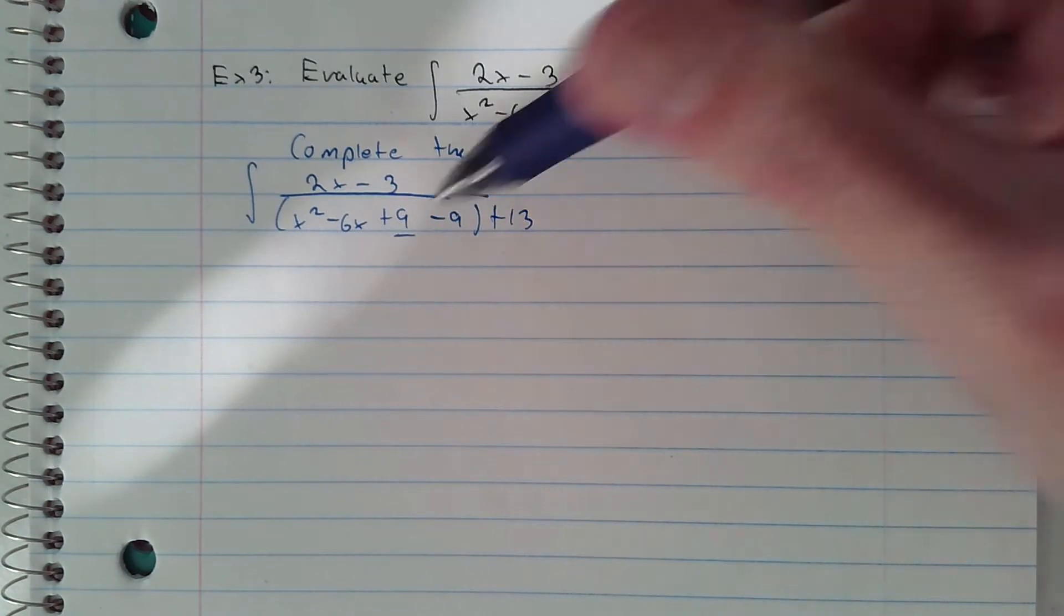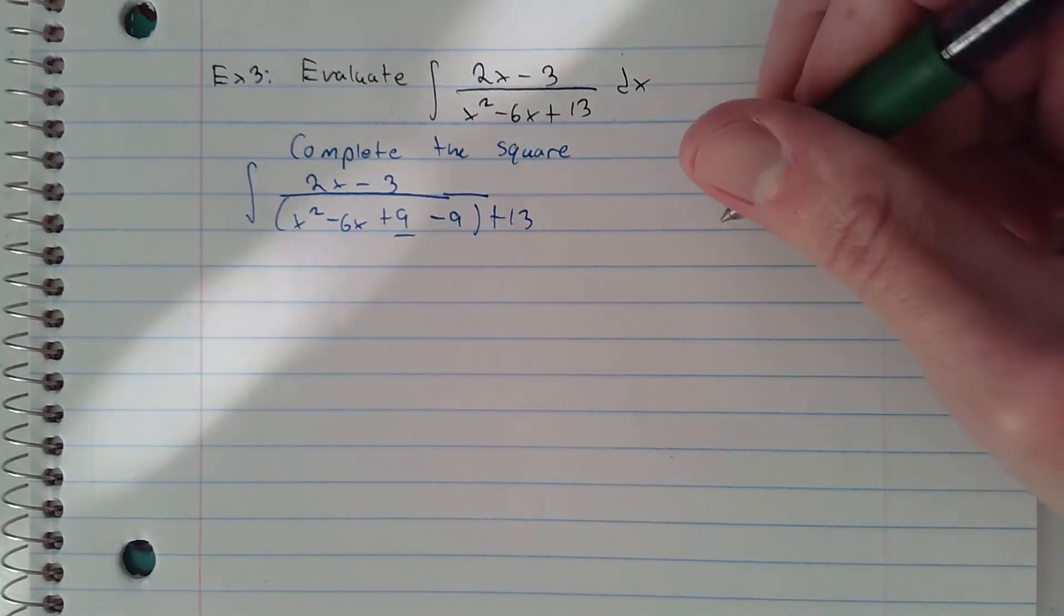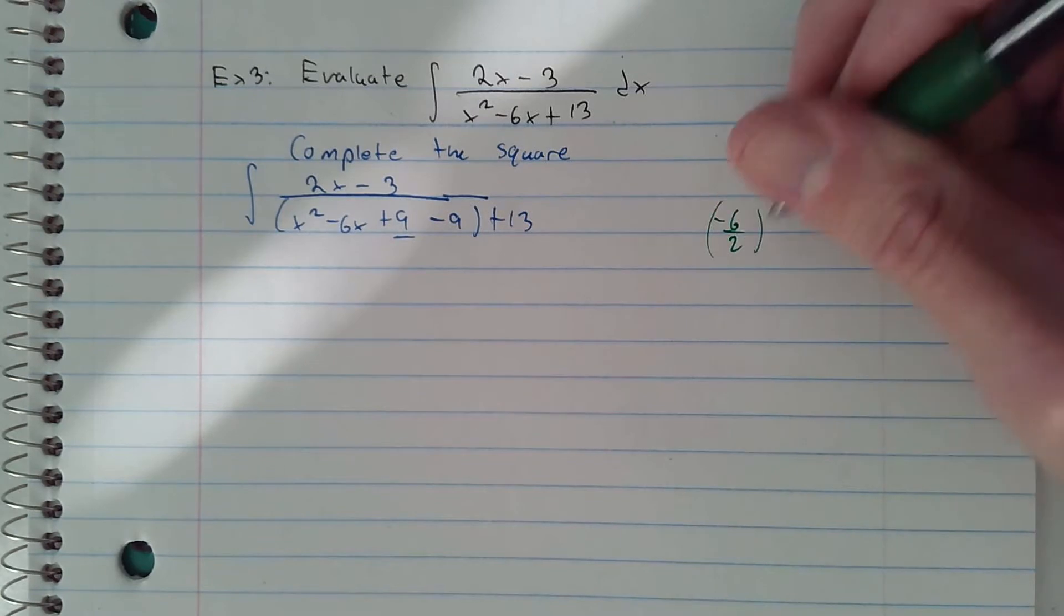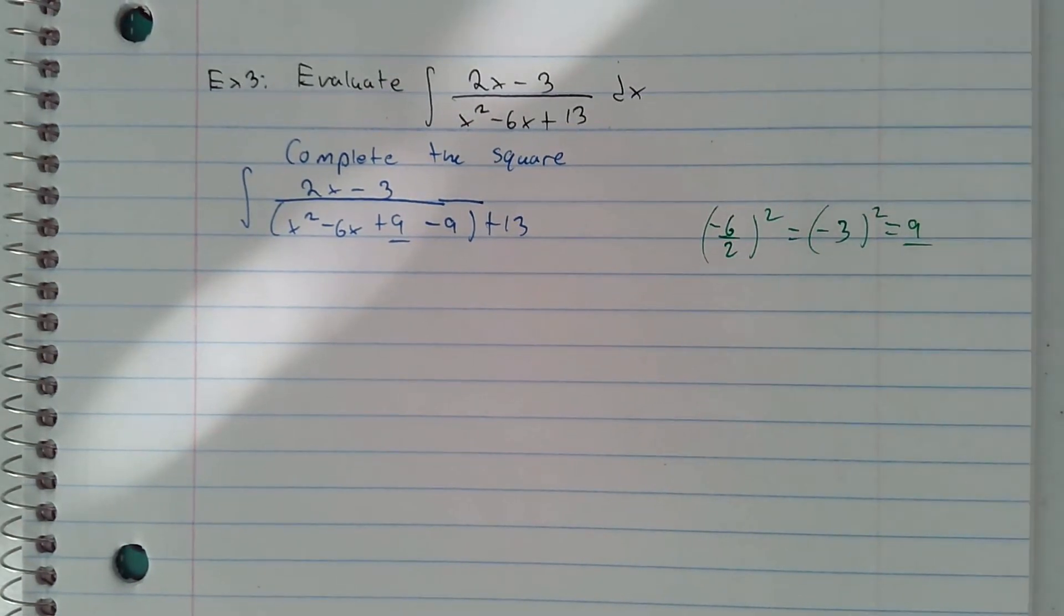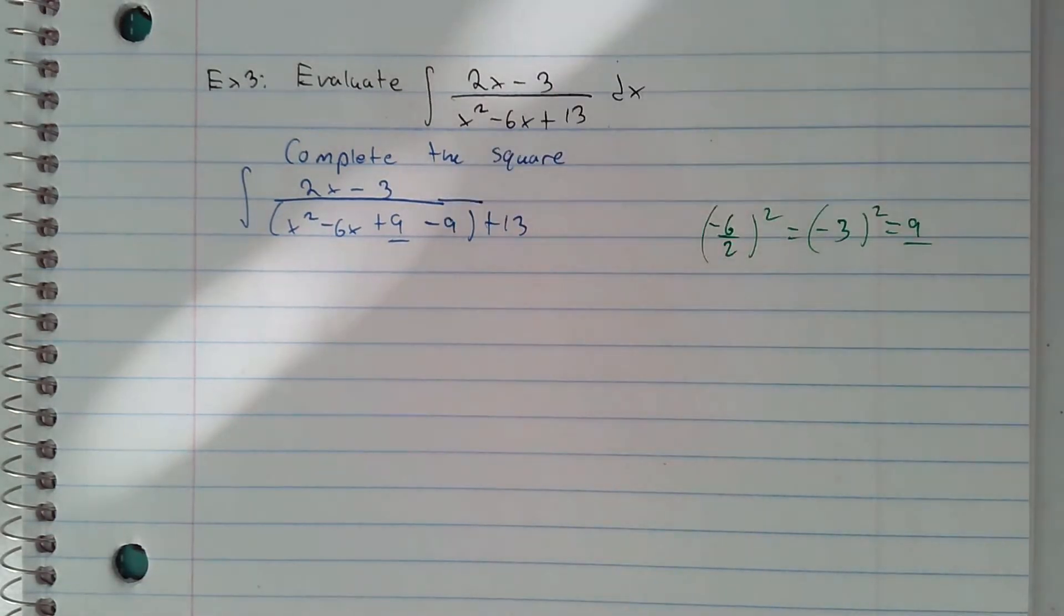When we take half of negative 6 and square it, negative 3 squared is 9, so we add 9 to both sides, or add 9 and subtract 9.